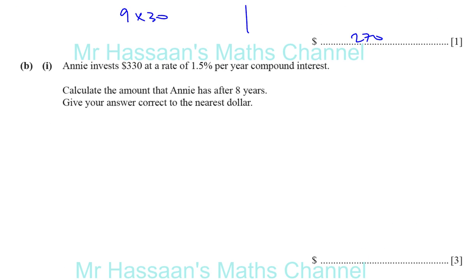Annie invests $330 at a rate of 1.5% per year compound interest. Calculate the amount that Annie has after 8 years, giving your answer correct to the nearest dollar. Compound interest is not like simple interest. With simple interest, the 1.5% would always be of the original 330. With compound interest, it's 1.5% of 330, then 1.5% of the new value, and so on.